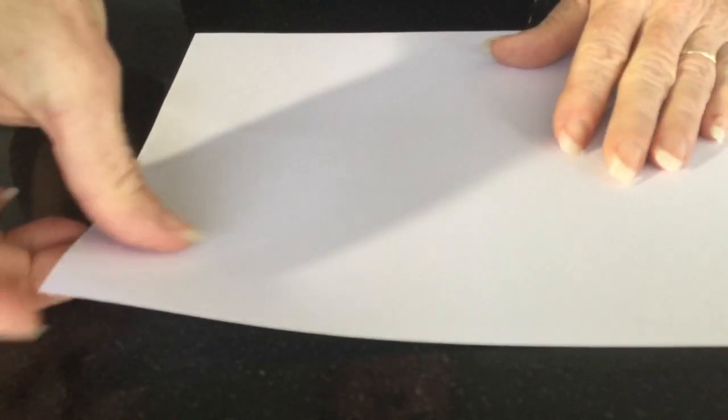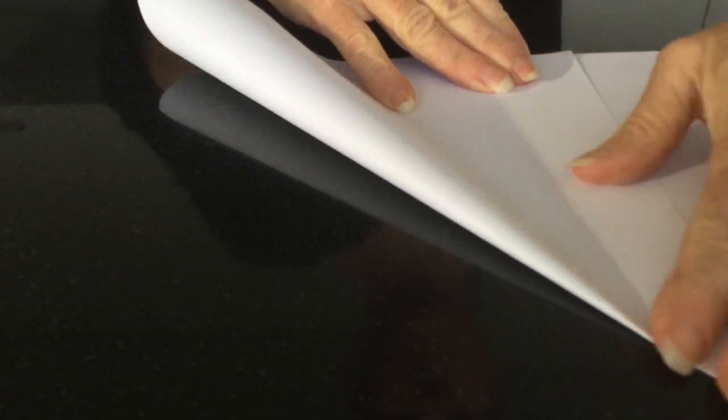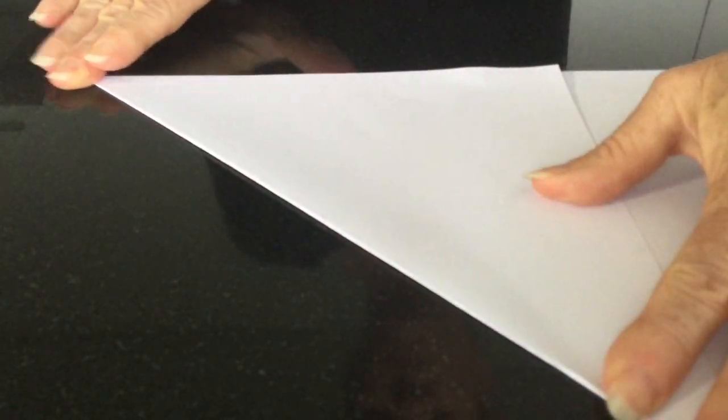All you'll need is a piece of paper. So just fold that over and then we're going to cut that so it ends up into a square.